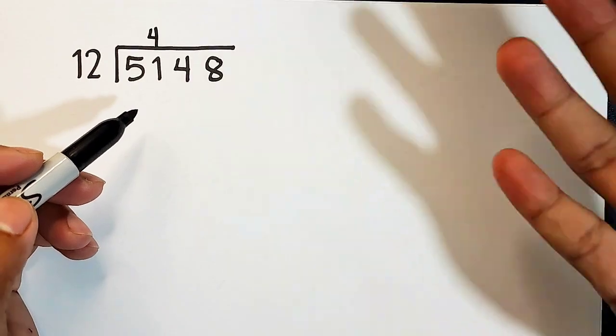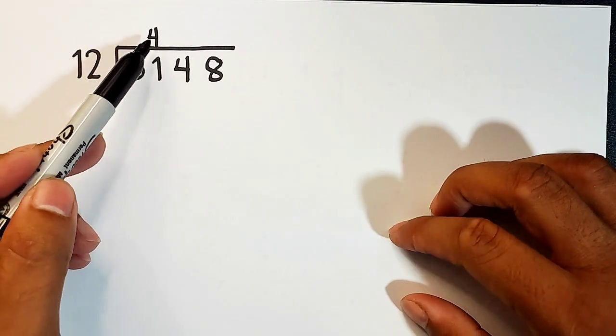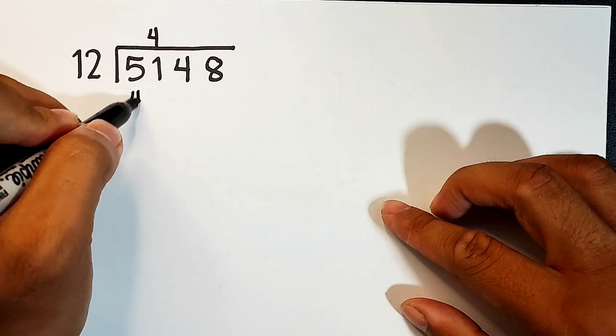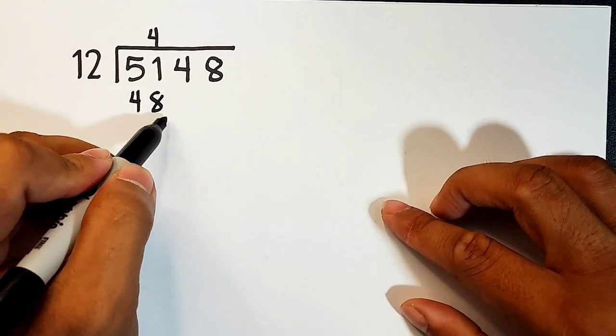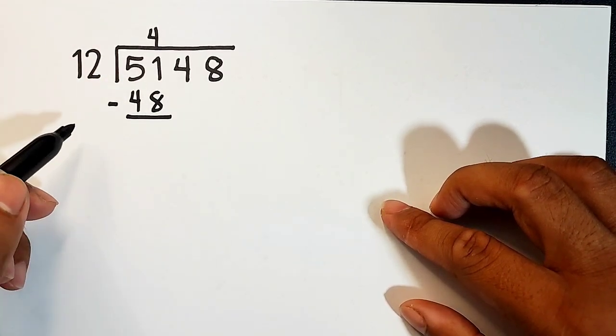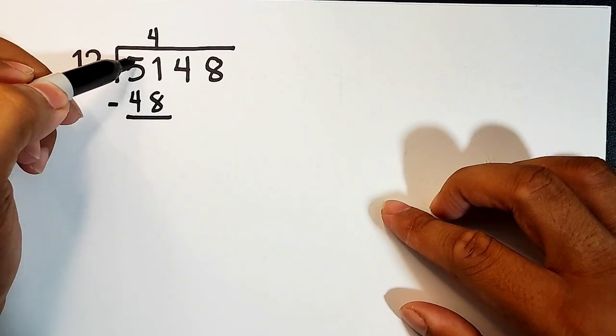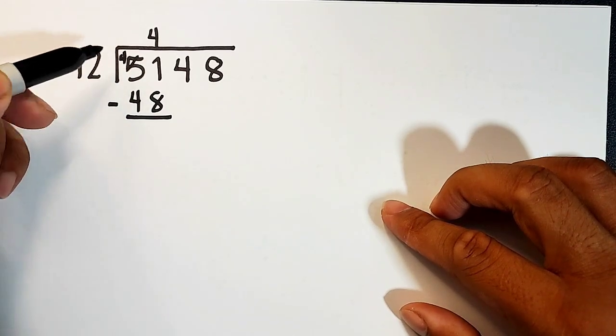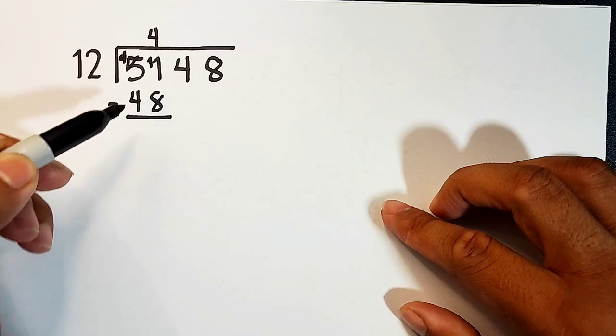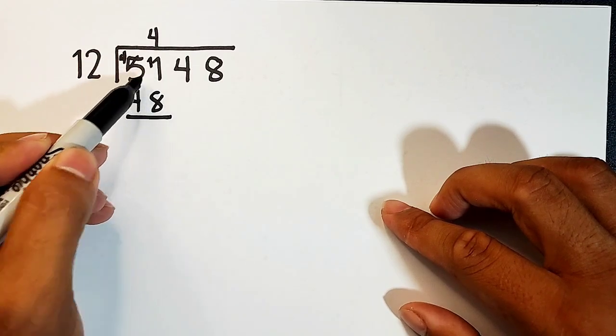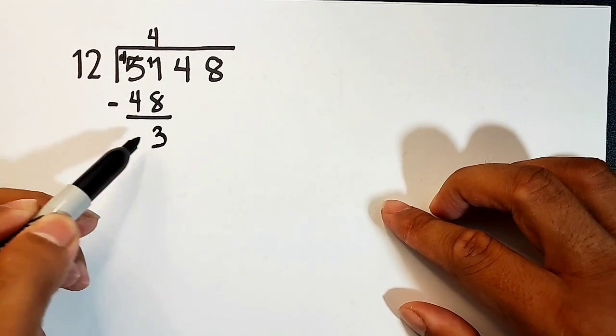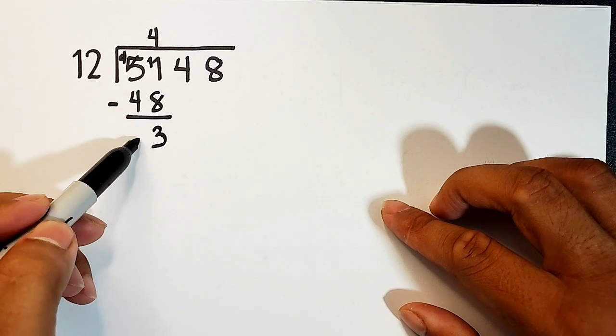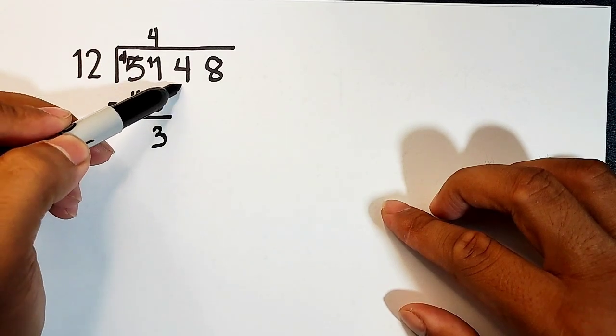So we have here 4. Then after dividing, we need to multiply. Of course, 4 times 12 is 48, and then subtract. So we will borrow one here. This will become 11. So 11 minus 8 is 3, and 4 minus 4 is 0.